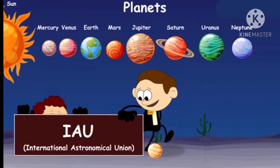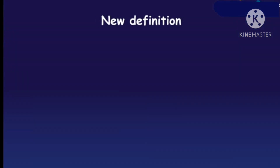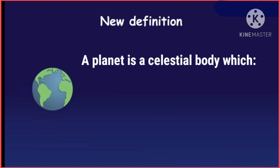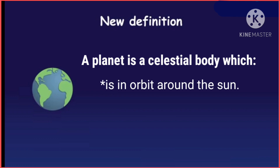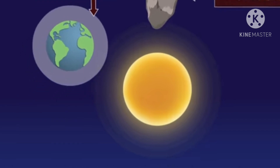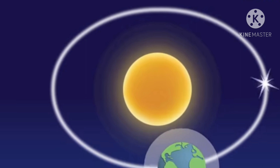It is not considered a planet anymore because in 2006, astronomers of the IAU gave a new definition of a planet to the world. According to this new definition, a planet is a celestial body which is in orbit around the Sun, is spherical in shape, and has cleared the neighborhood around its orbit.